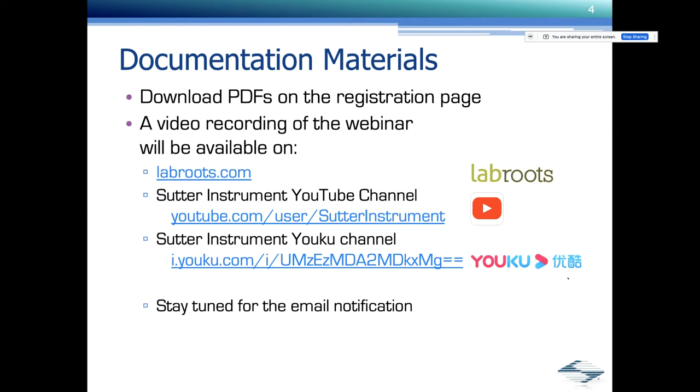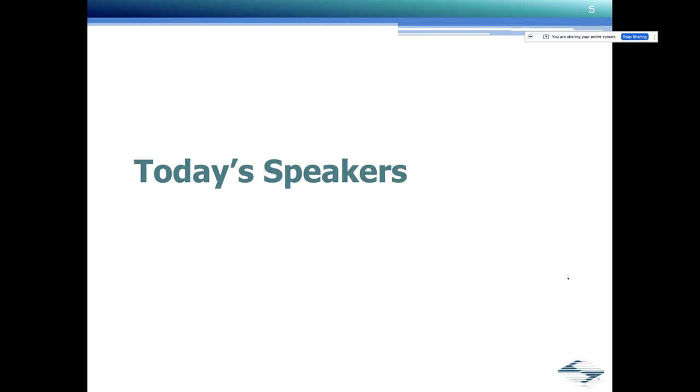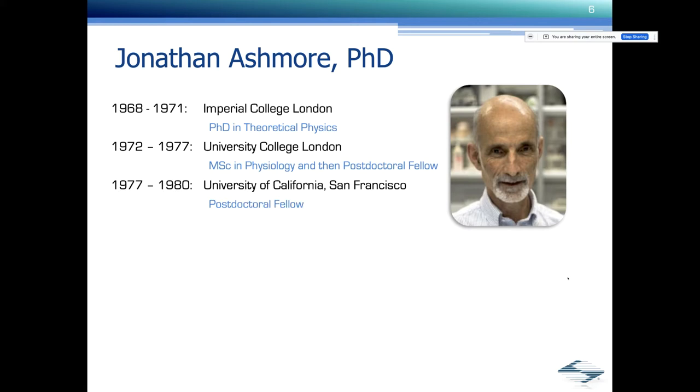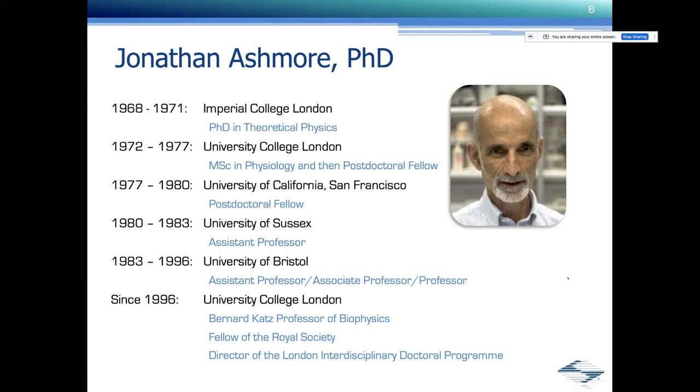Let me introduce today's speakers. I'll start with our guest speaker, Jonathan Ashmore. He got his PhD in theoretical physics at the Imperial College London, and then transitioned to what he calls a somewhat painful transition to a wet lab, doing his masters in physiology, and then followed that up with a postdoc at UCL. He came to University of California, San Francisco, where he also met and interacted with some of the founders of Sutter Instruments. Then went back to the UK, to the University of Sussex, and then Bristol as a professor eventually. And since 1996 is at the University of London, where he is today Bernard Katz Professor of Biophysics, a fellow of the Royal Society, and the director of the London Interdisciplinary Doctoral Program.